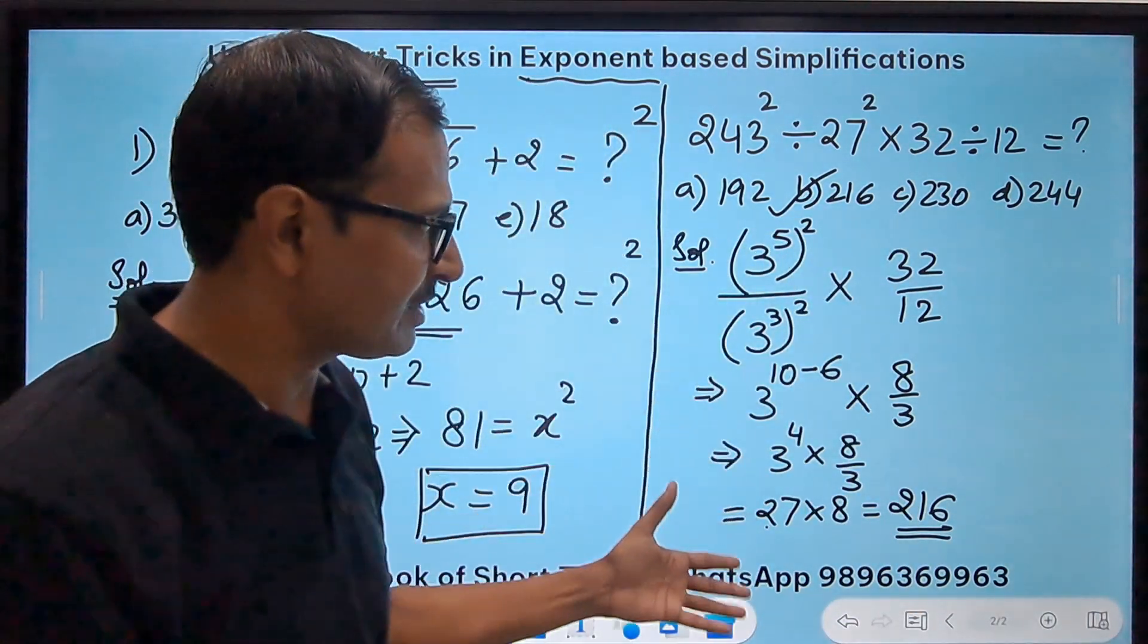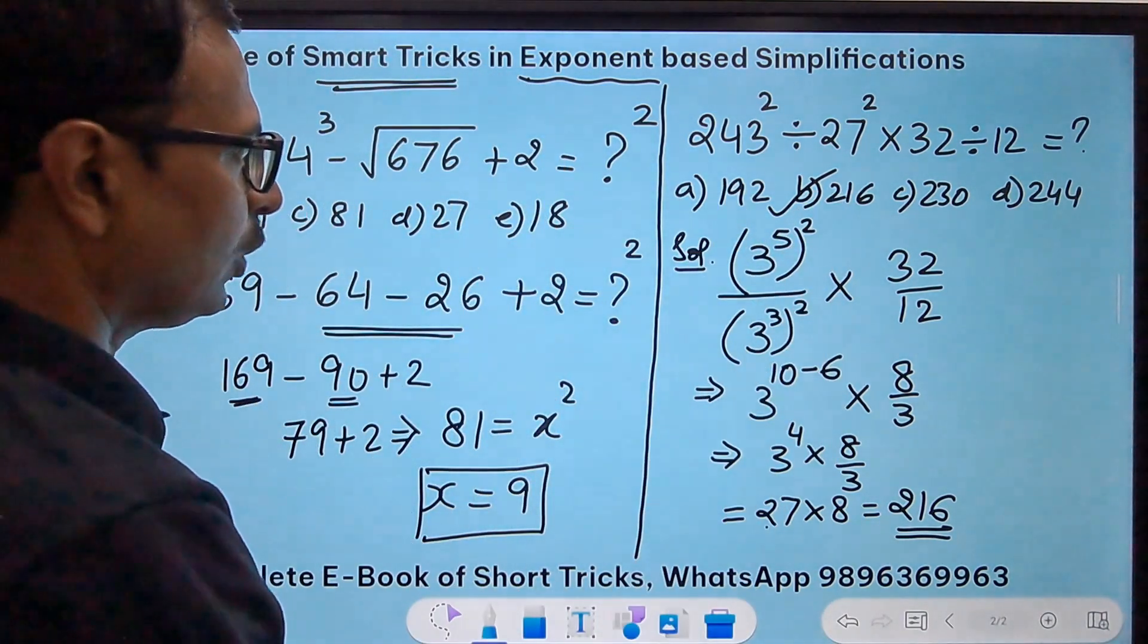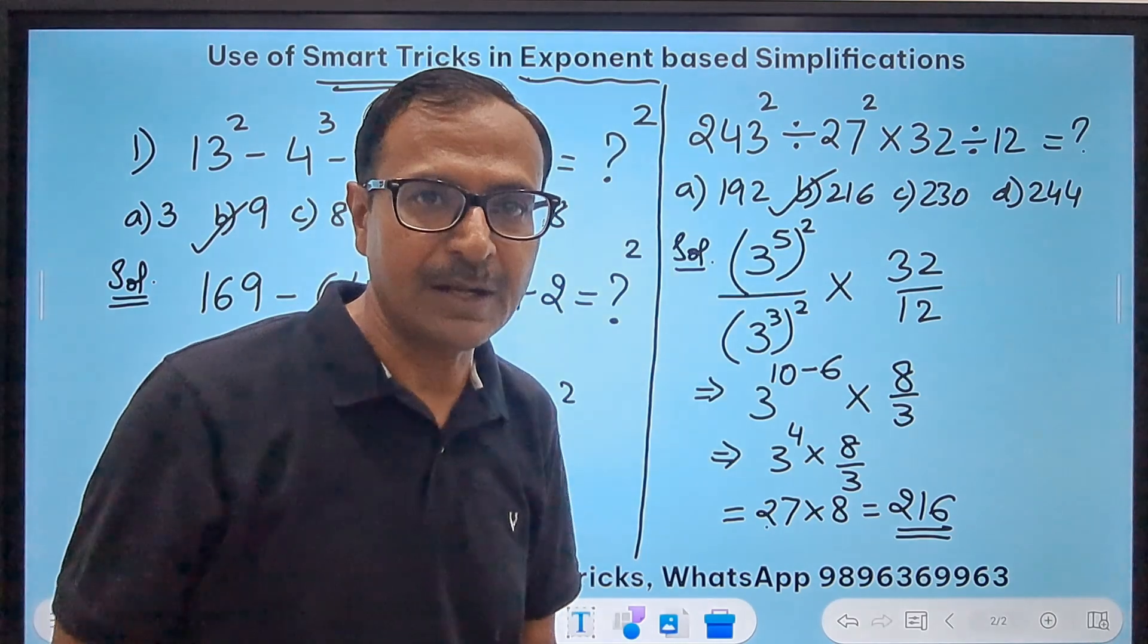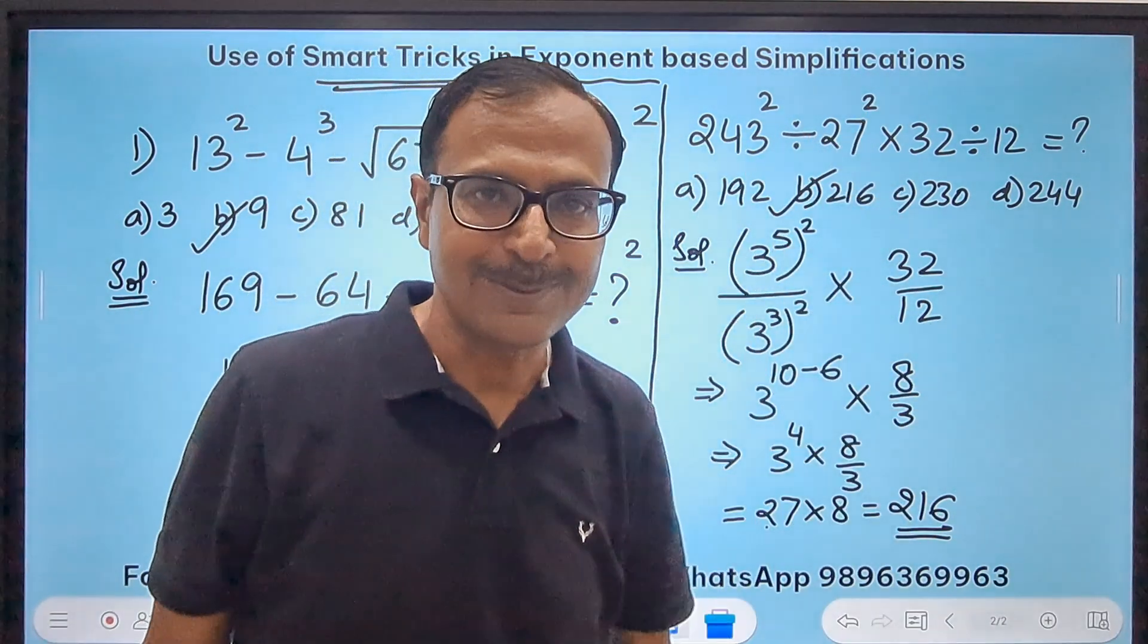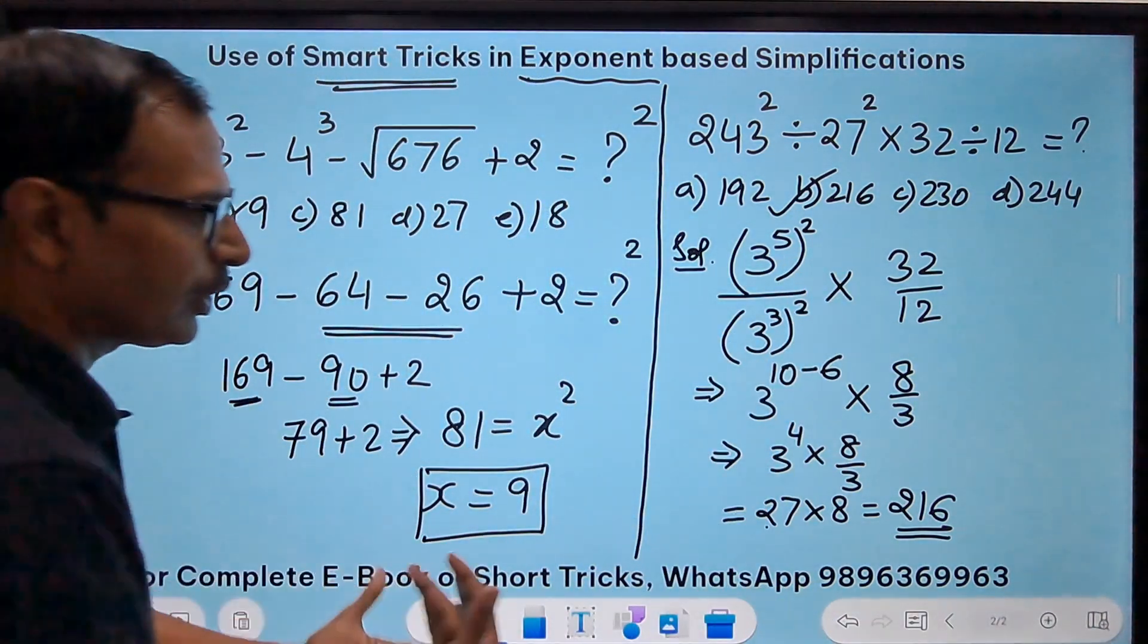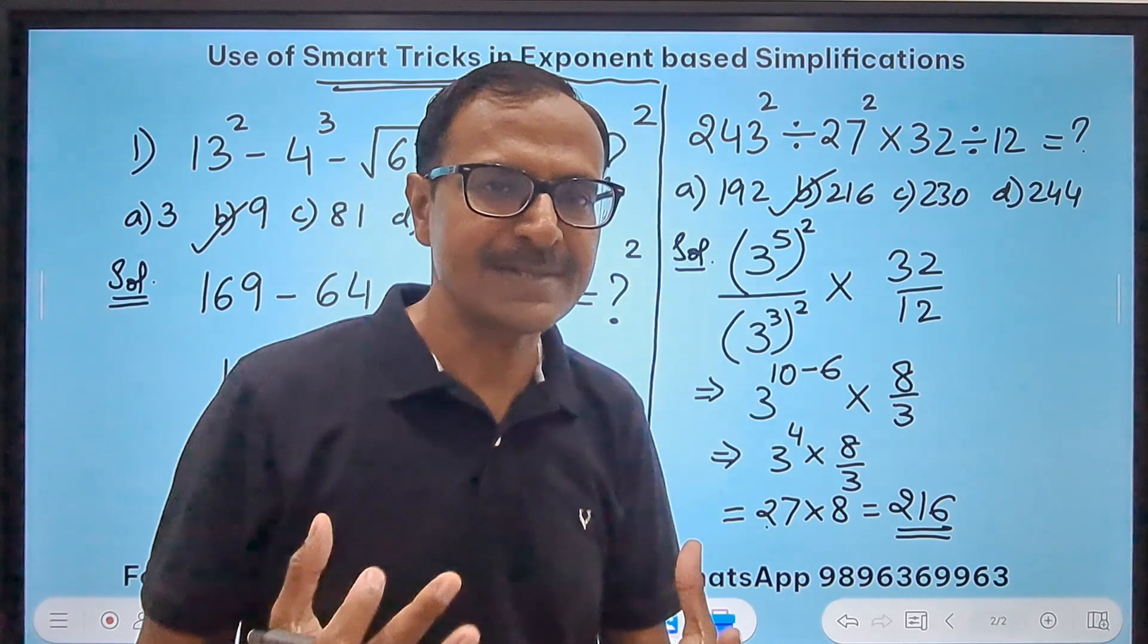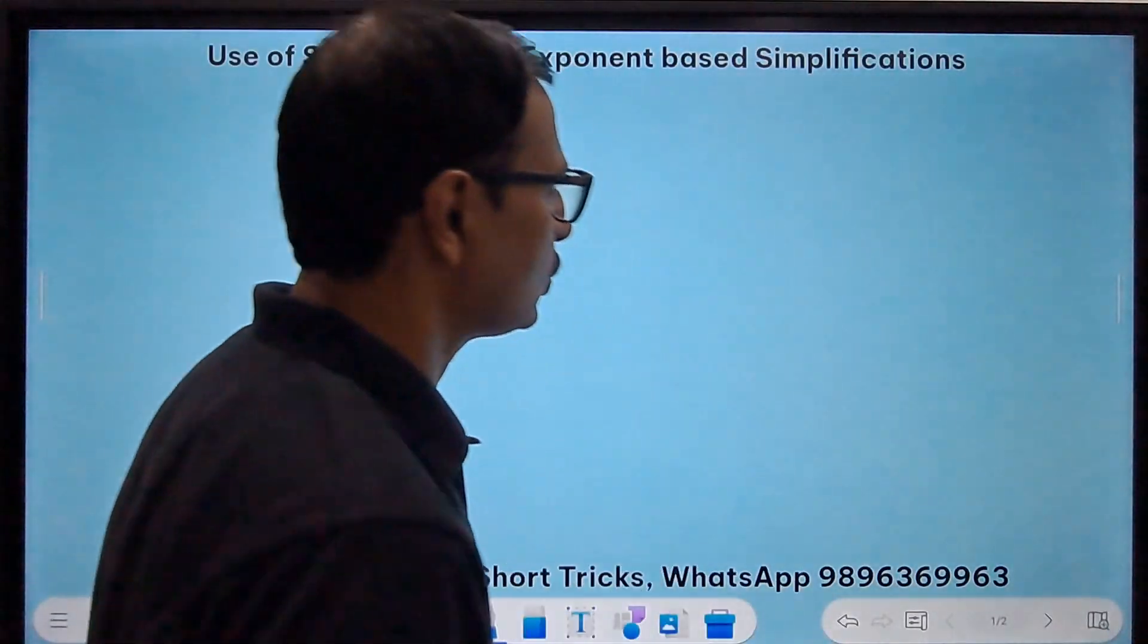Now most of the steps which I have written there are for your reference. I won't be writing all the steps if I have to do it in a competitive exam. Just want to explain how the thinking process has to be taken up and you don't have to square this and square this to get to your answer. Now if you have understood this we can move on to some little bit on the higher side difficulty level. Let's see how we can crack those questions as well.